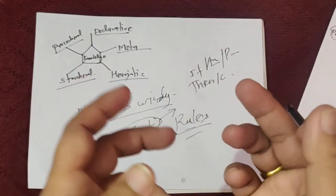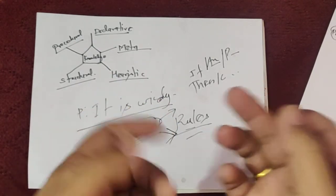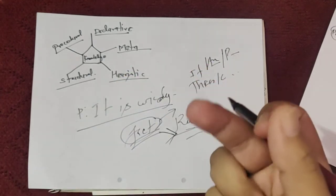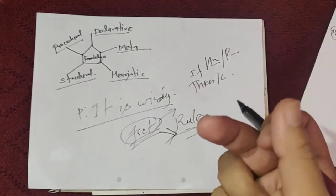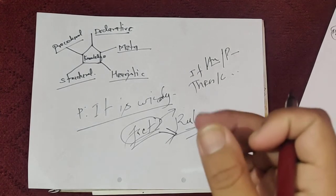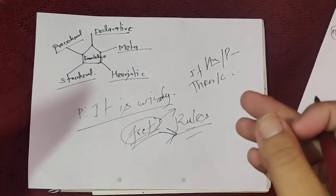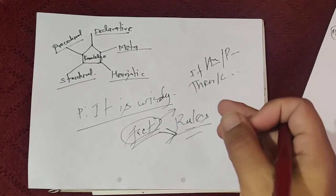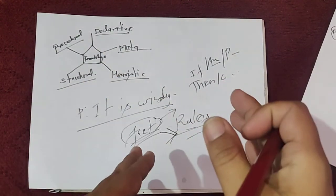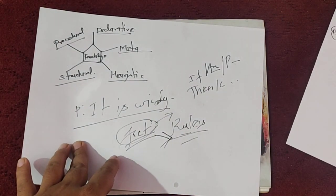Compound rules combine multiple statements using conjunction or disjunction. For example: 'If it is raining and I have an umbrella, then I will go home.' Different types of conjunctions and disjunctions are used to combine two or more statements in a rule — that is called a compound rule. In the next video we will be discussing about logic. Thank you and bye bye.